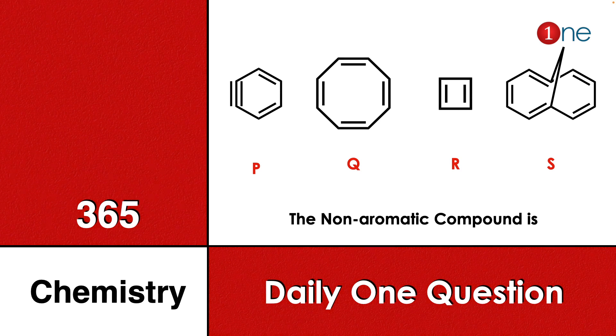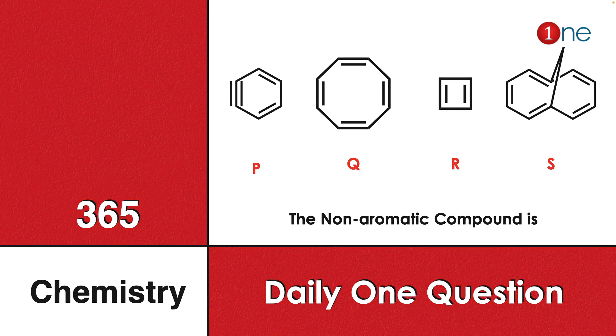Welcome to One Chemistry. This is the 365 Chemistry series, Daily One Question. Four different compounds are given: P is benzene, Q is cyclooctatetraene, R is cyclobutadiene, S is bridged carbon with naphthalene. You have to find which one is non-aromatic.